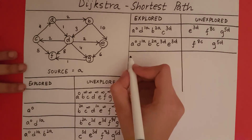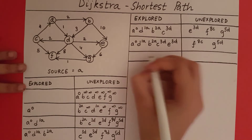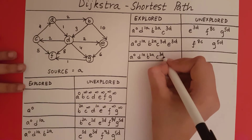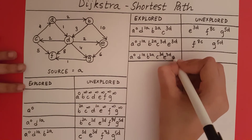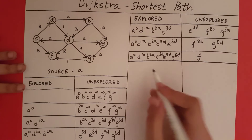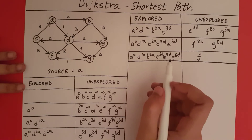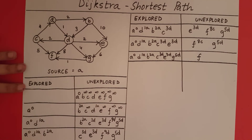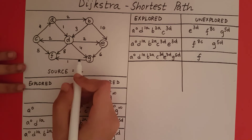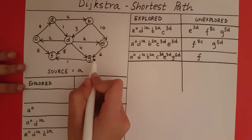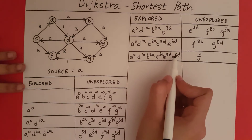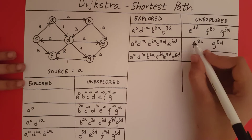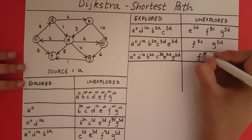We will take the minimum of the remaining vertices and bring it to the explored side. We have just explored G. There is an edge from G to F with weight 1. The potential distance of F is 1 plus 5 equals 6. Since 6 is less than 8, we can update F to 6 with parent G.